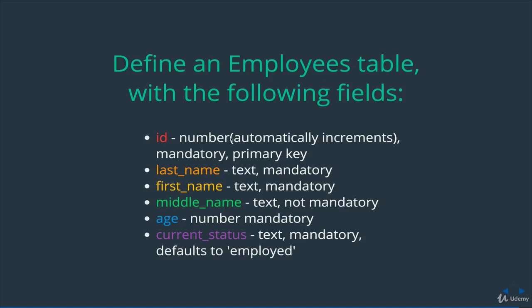ID is relatively self-explanatory — it should be a number that automatically increments. It's mandatory, so it can't be left off, and it's a primary key. Last name and first name are both text — you need to use the actual data type term — and neither of them can be left blank either. They're mandatory.